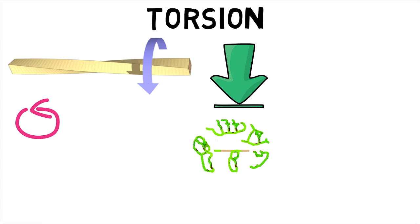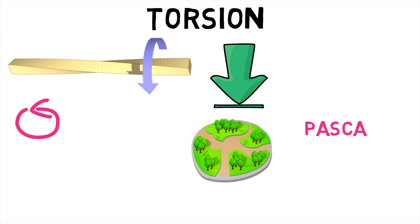Now, torsion is the twisting of an object due to an applied torque. It is expressed in newtons per square meter or pounds per square inch.